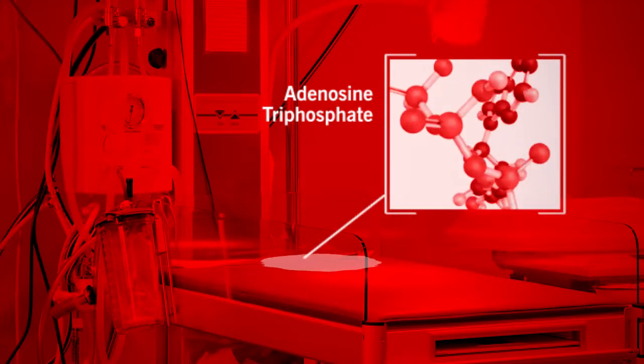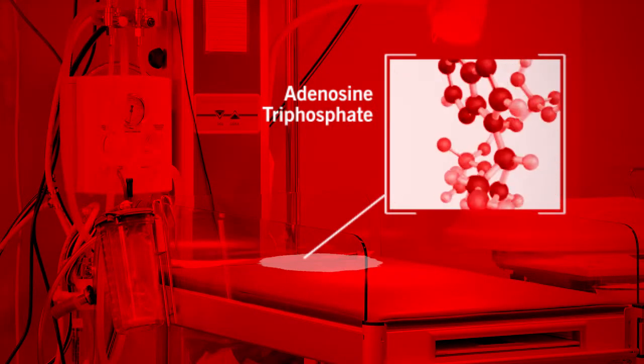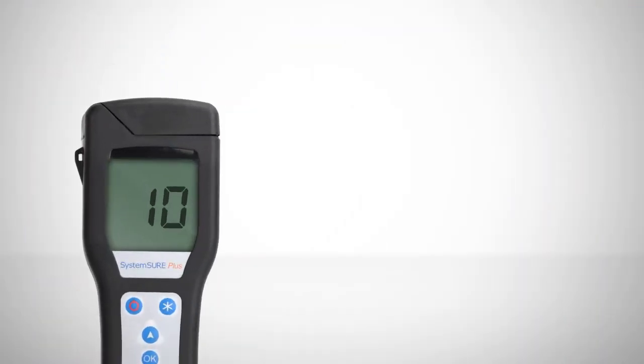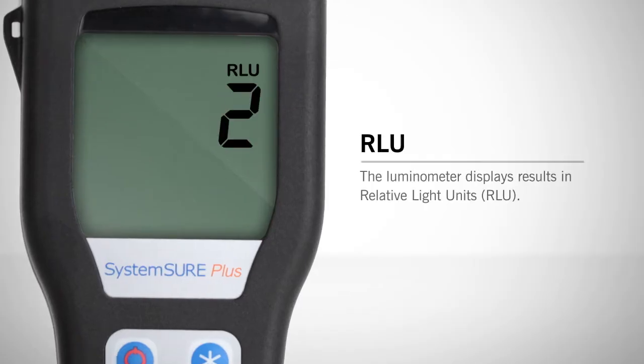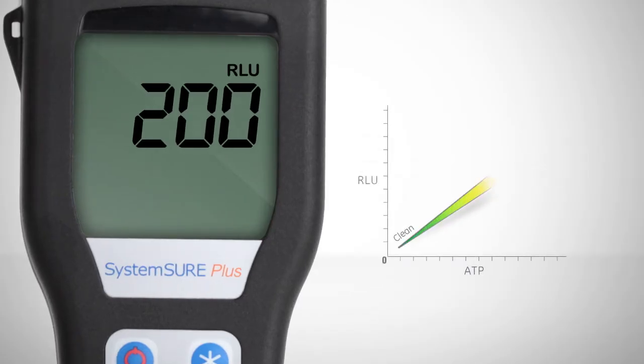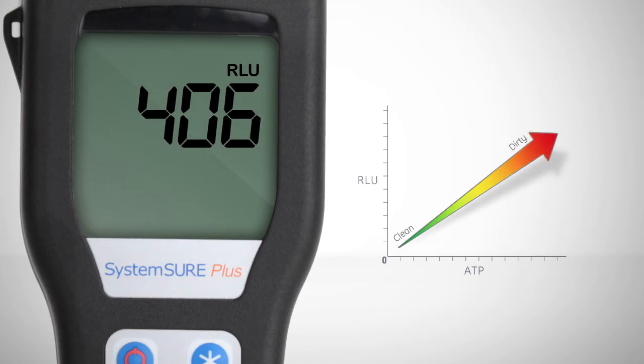ATP is the energy molecule found in all living cells, and the presence of ATP signifies whether or not a surface is clean. Test results are delivered in 15 seconds and are measured in Relative Light Units, or RLUs. So the greater the amount of ATP, the greater the RLU number, and the dirtier the surface.